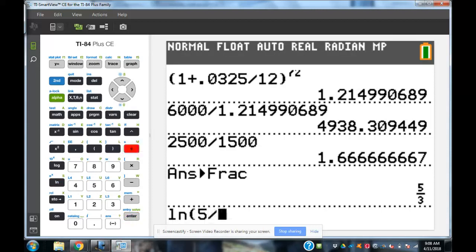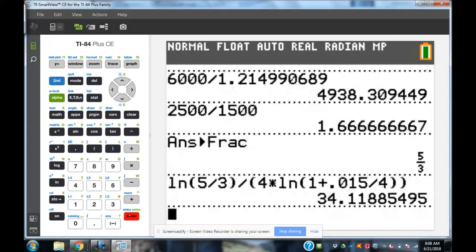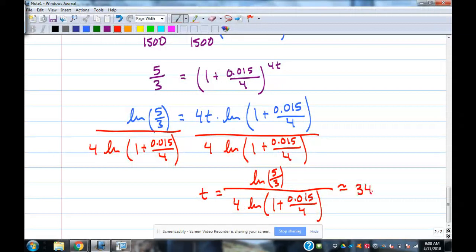So, t is equal to the natural log of 5 thirds divided by 4 natural log of 1 plus 0.015 over 4. Let's get the decimal approximation for that. See how long it's going to take us to get from 1,500 bucks to 2,500 bucks. So, natural log of 5 divided by 3 divided by parentheses 4 times the natural log 1 plus 0.015 divided by 4. So, close up all those parentheses, 34.12 years. Takes a while there at that interest rate. Now, wonder why people invest in the stock market instead of savings accounts. Your money grows faster, but you could also lose it. That's the risk. High risk accounts when you're young. Low risk accounts when you get closer to retirement age. That's a life lesson for you. Personal finance in an algebra class.